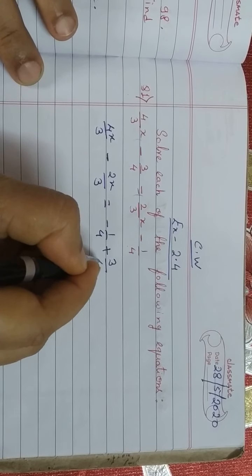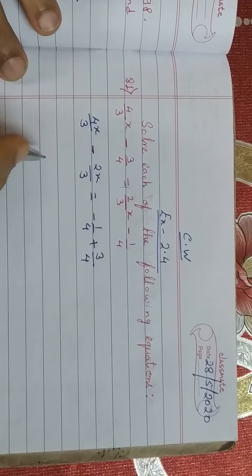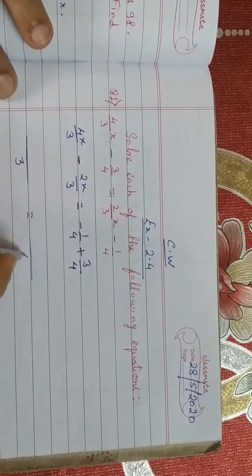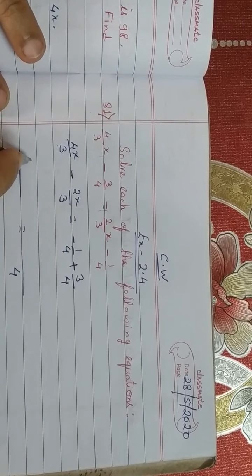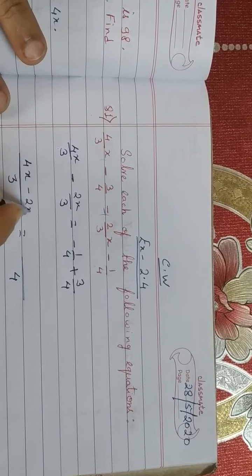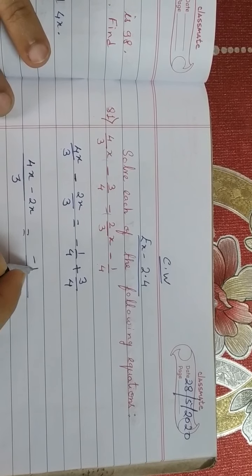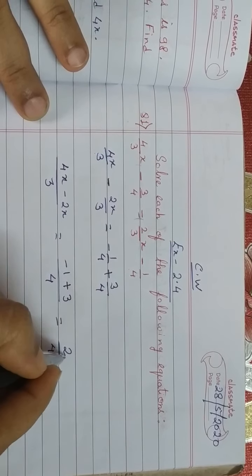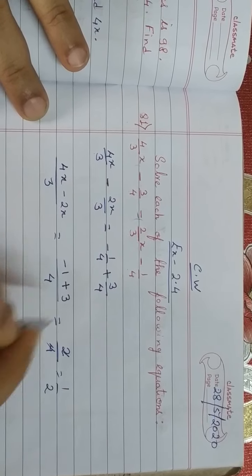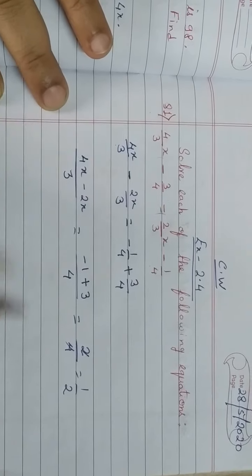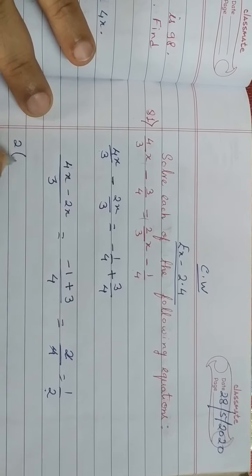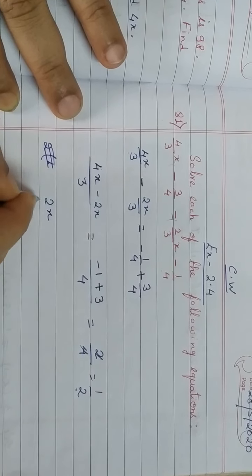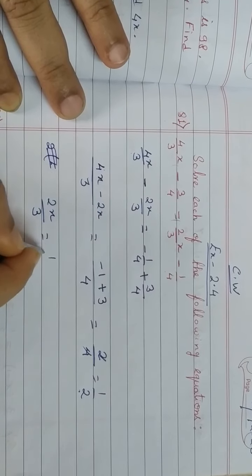The minus 3/4 moves to the right side and becomes plus 3/4. Since they have the same denominator, LCM on the left side is 3 only and on the right side the LCM is 4 only. The numerator on the left side gives 4x minus 2x, and on the right side minus 1 plus 3. Now do the cross multiplication.